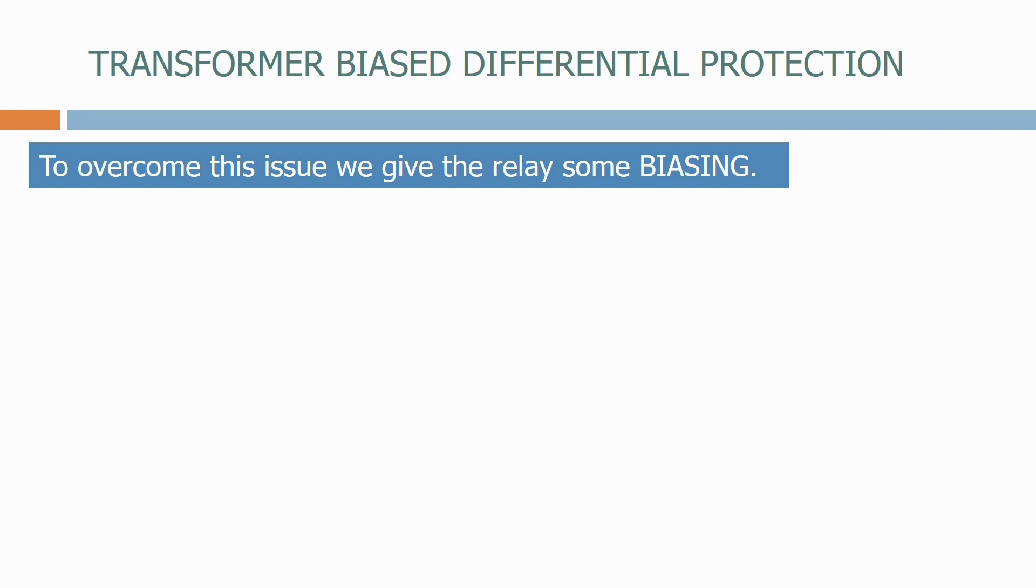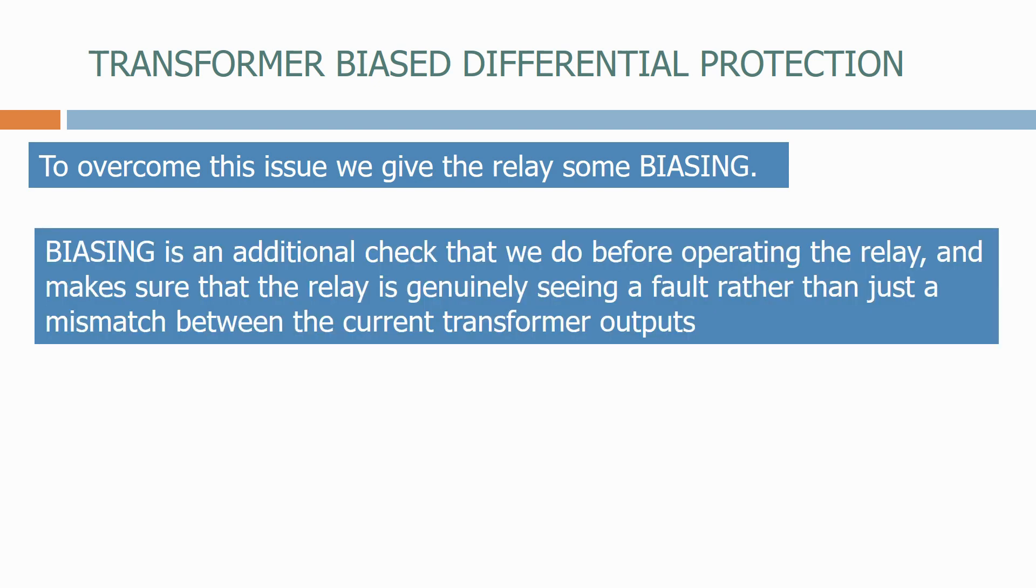To overcome this issue, we give the relay some biasing. Biasing is an additional check that we do before operating the relay, and make sure that the relay is genuinely seeing a fault rather than just a mismatch between the current transformer outputs.